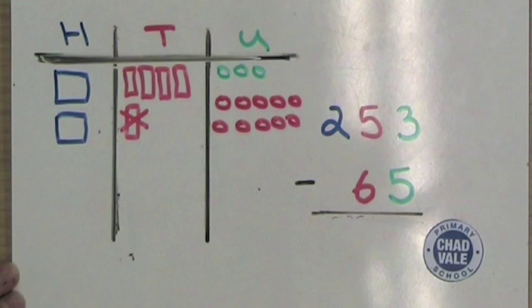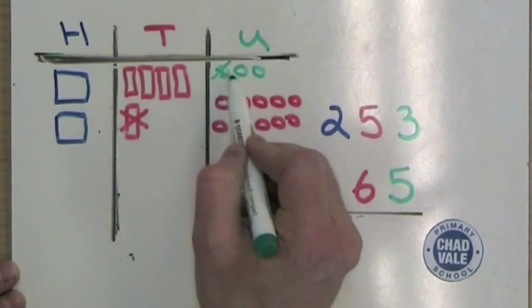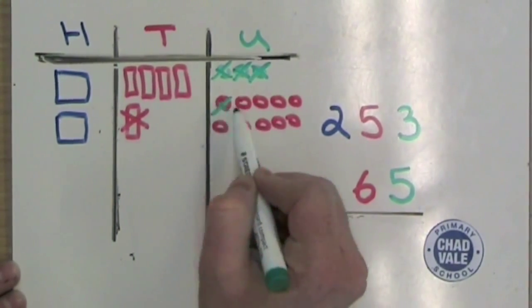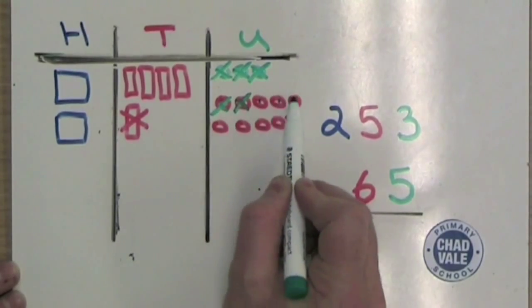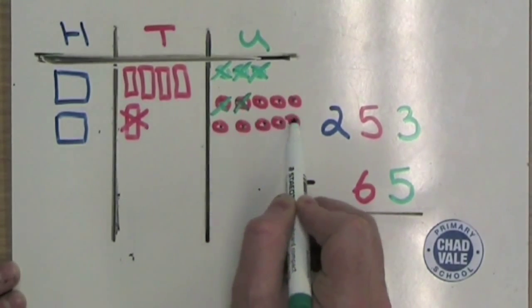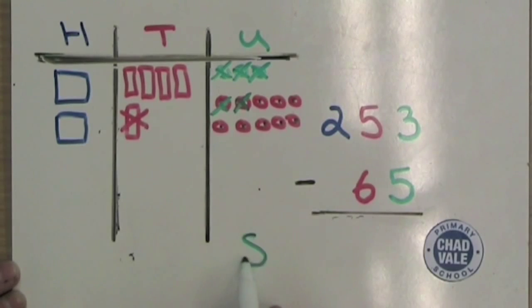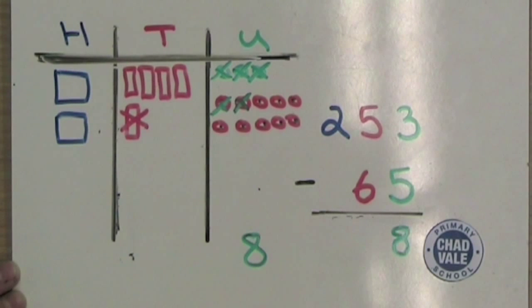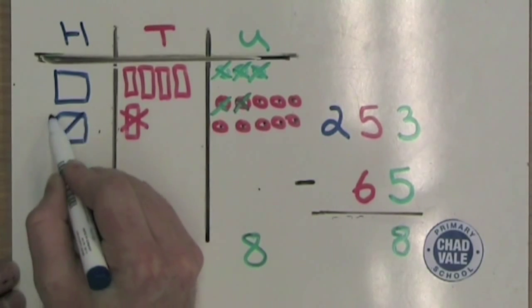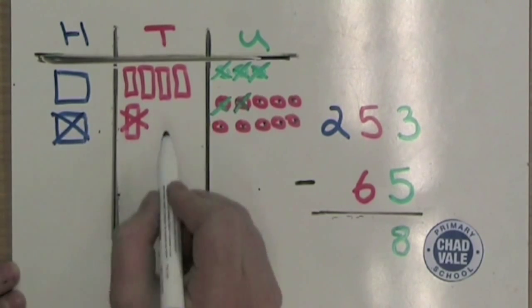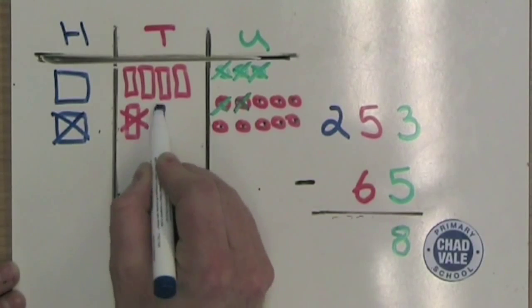Now we can subtract five units and cross them off: one, two, three, four, five. We count how many are left and write them in the units column. We now need to subtract six towers of 10, but of course we can't do this, so we cross out a hundred and break it up into 10 towers of 10, drawing them in the tens column.